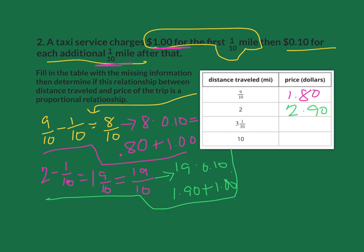For the next one, we've got three and one-tenth minus one-tenth. That leaves me with 3. How many tenths is that? That is 30 tenths. I'm going to take that 30 and multiply it times the 10 cents. That should give me $3, plus one more dollar. That's going to give me $4.